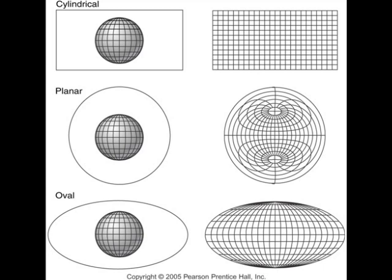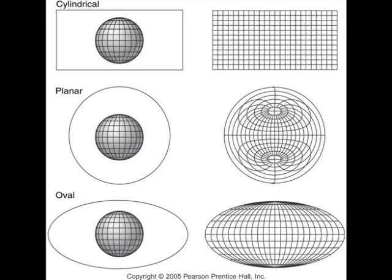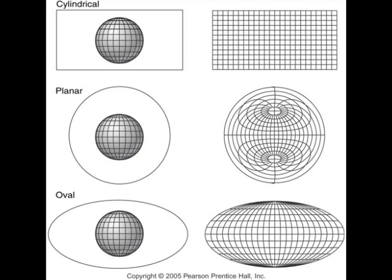To depict both direction and distance from a point, area must be distorted. Similarly, to preserve area as well as direction from a point, distance has to be distorted. Because the Earth's surface is continuous in all directions from every point, discontinuities that violate proximity relationships must occur on all map projections.